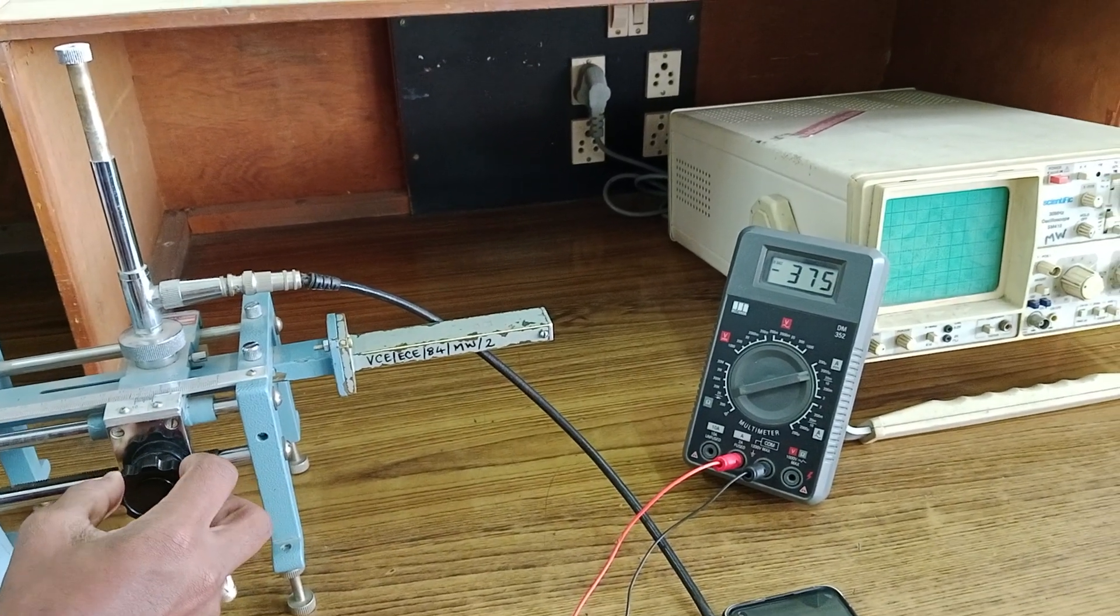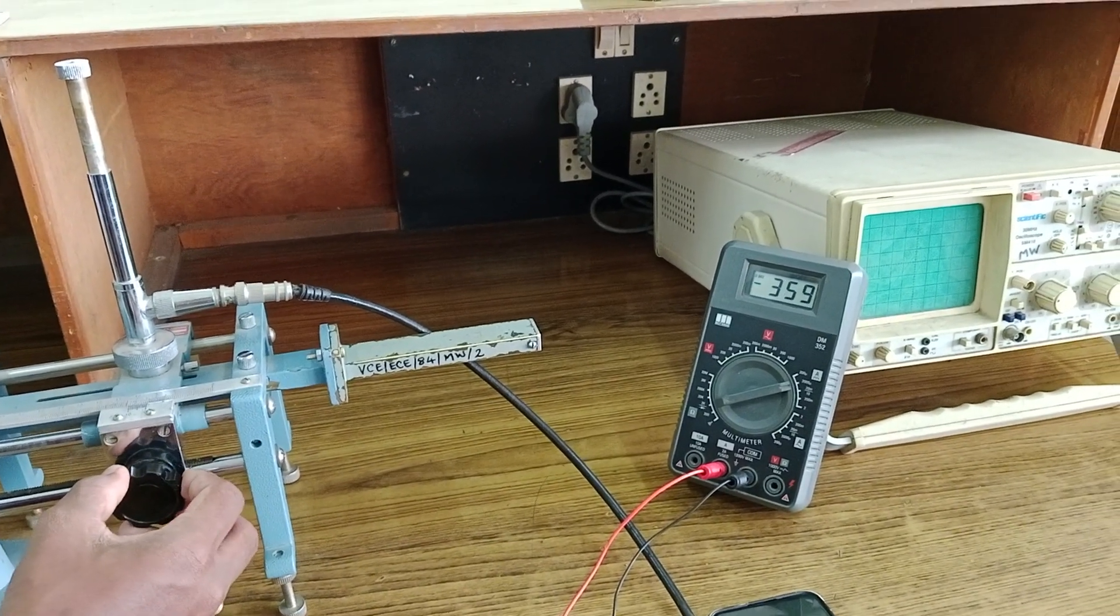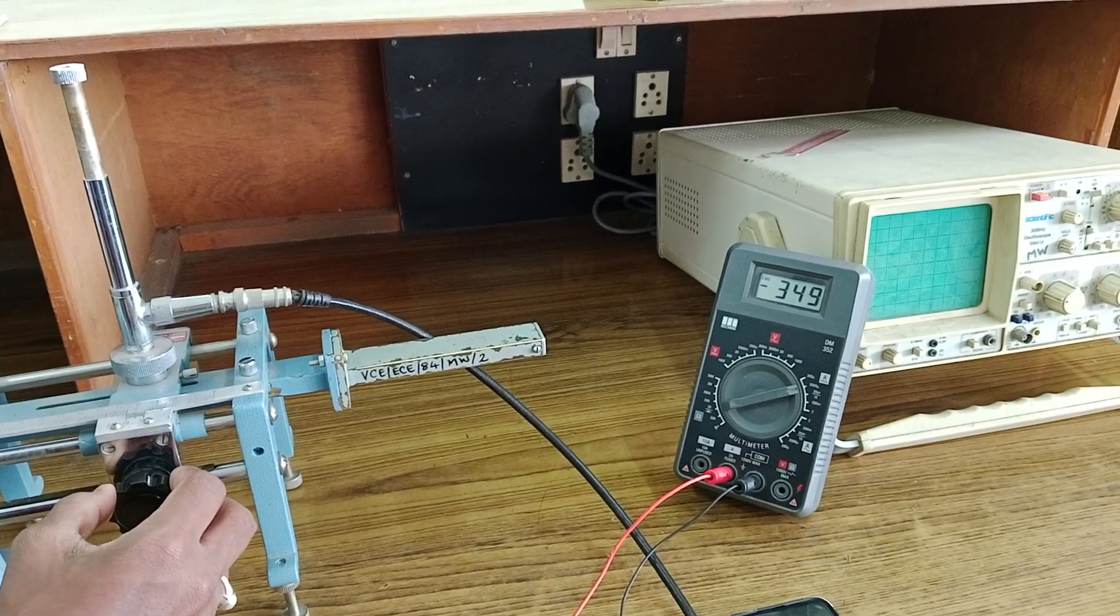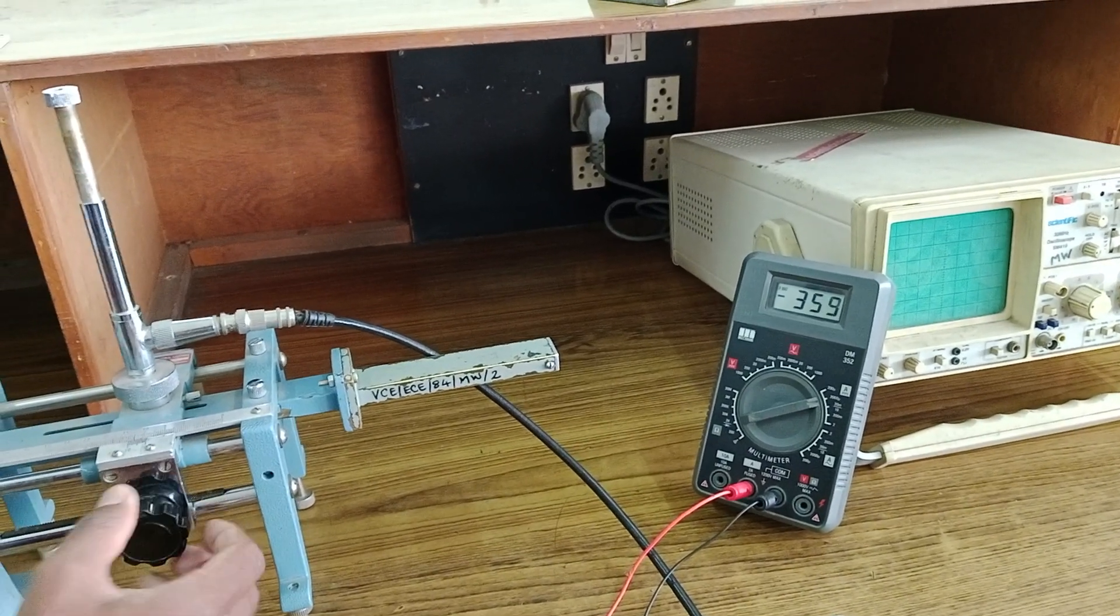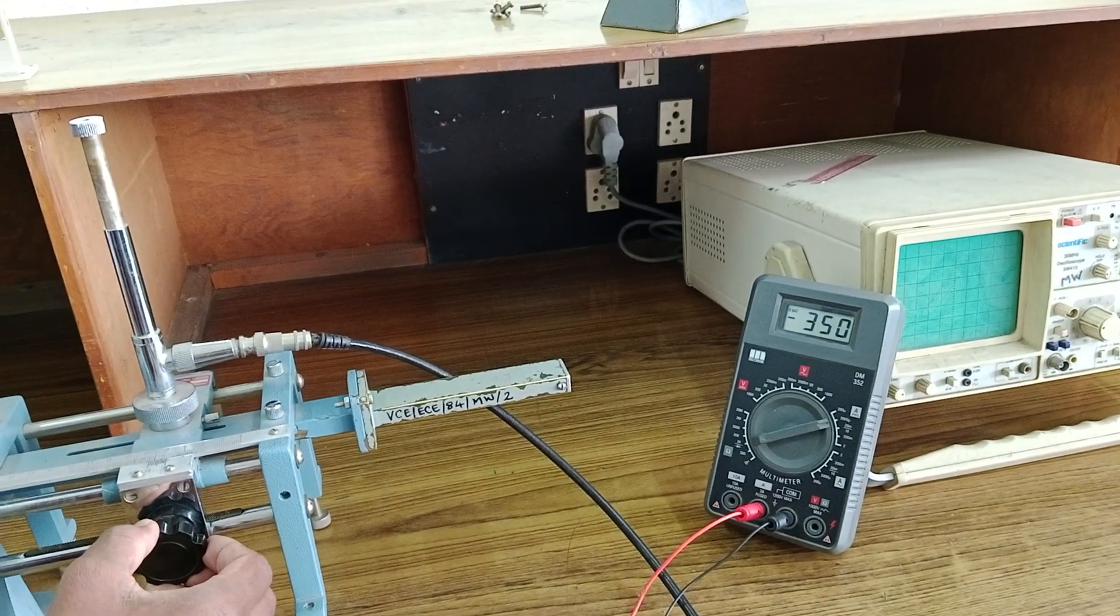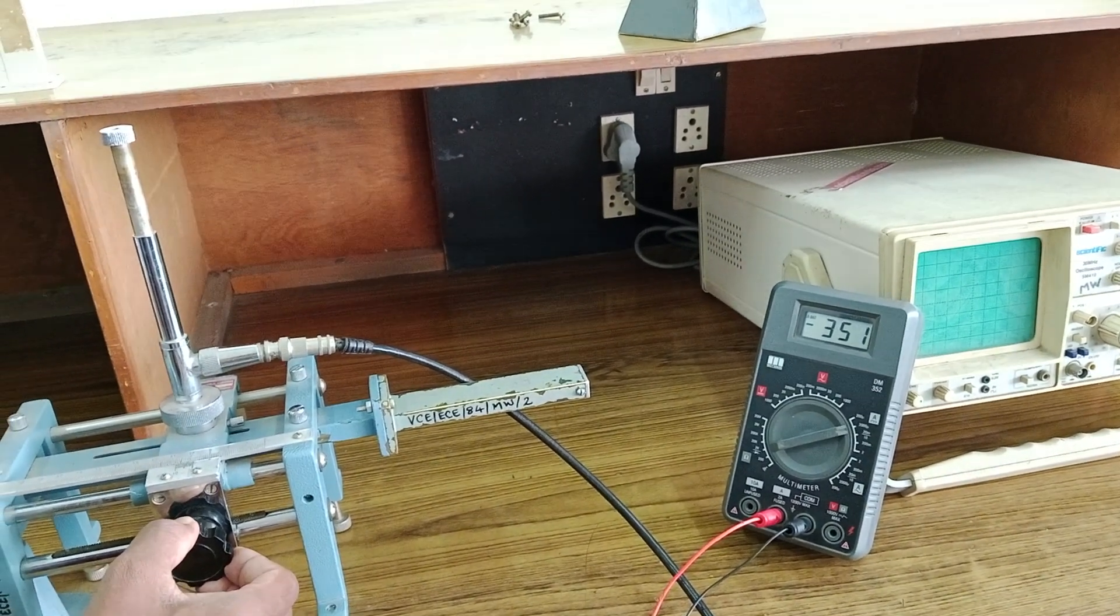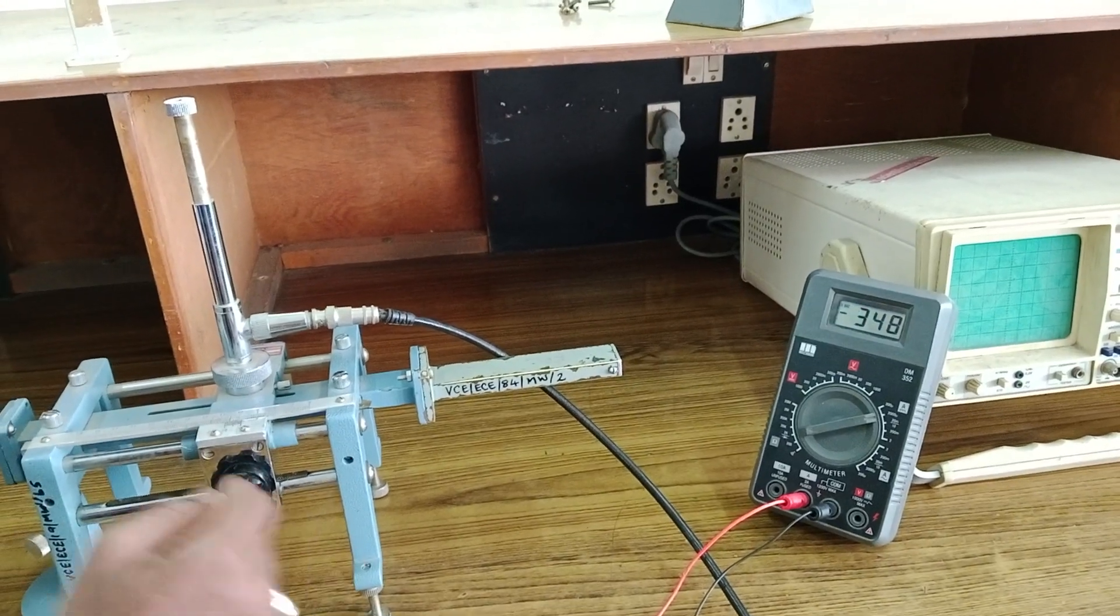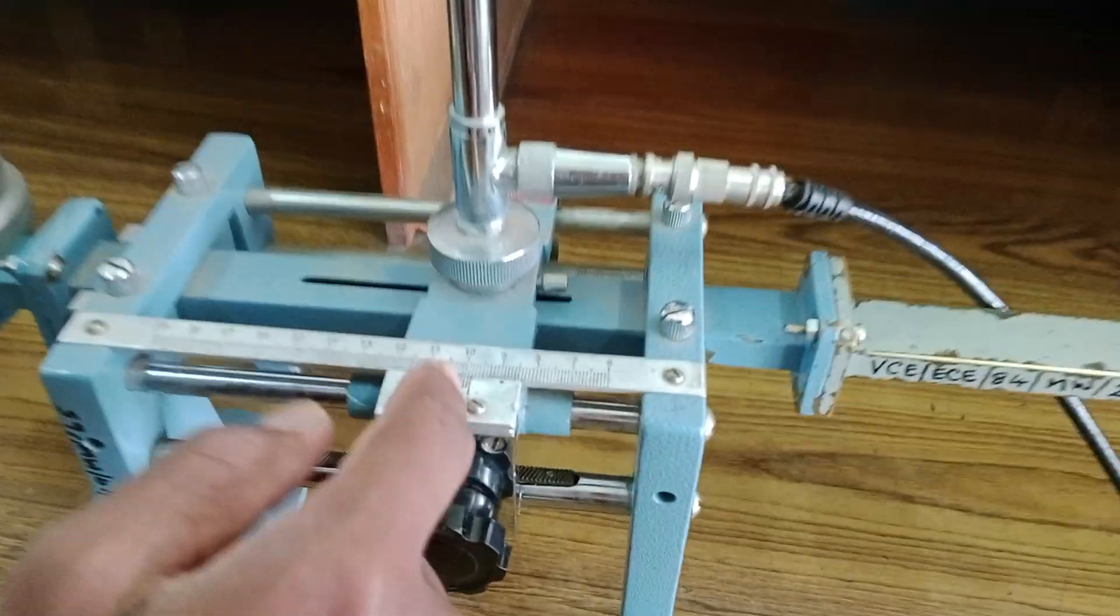Find a minimum. That is a point where it starts increasing after decreasing. So if you move it like that, if you see after 346, instead of decreasing, it is starting increasing. So you have to stop at 346 and note down the distance. You call it as D1.